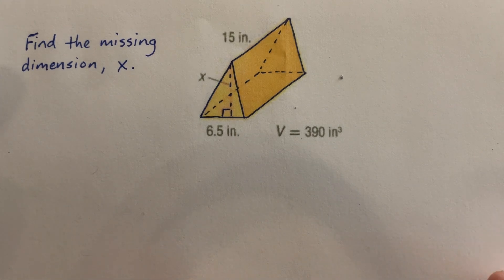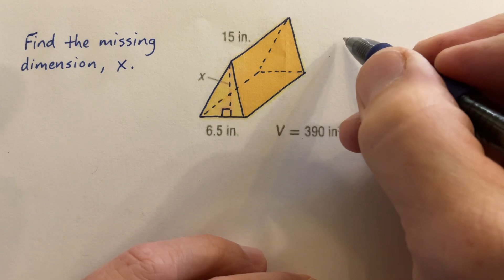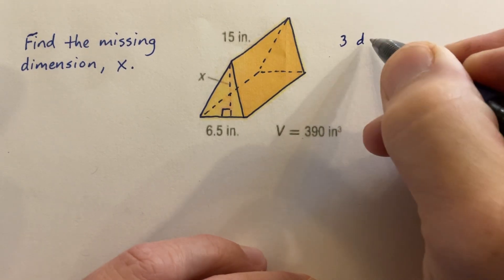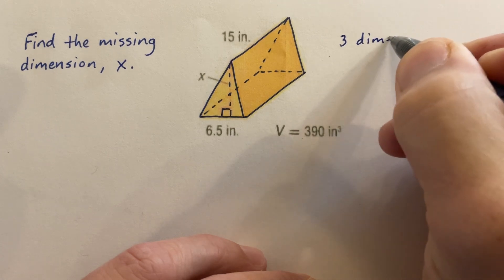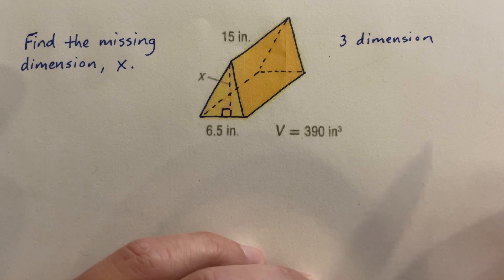Well, before I can find the missing dimension, I need to think about what kind of object I have here. When I look at this object, I can see it's a three-dimensional object. The reason why I know it's three-dimensional is because it looks like something I can pick up. Anything that is three-dimensional is something that we can pick up.